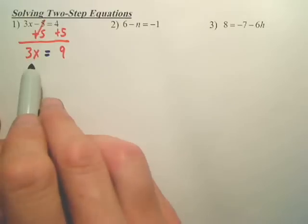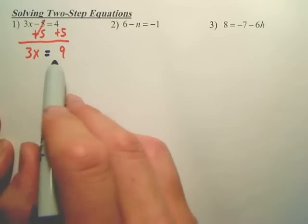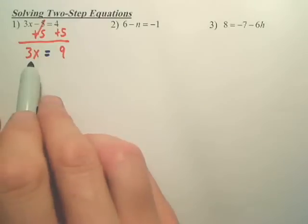Now, some people can look at this and go, oh, it's 3. Because we now have a one-step equation. So what are we going to do now? We have to solve for x.